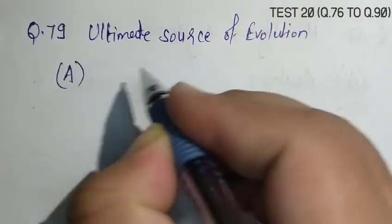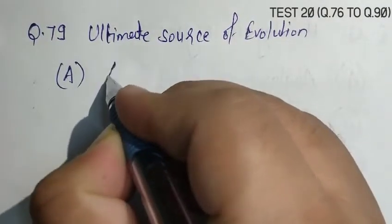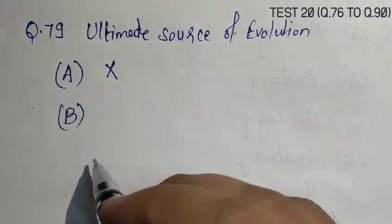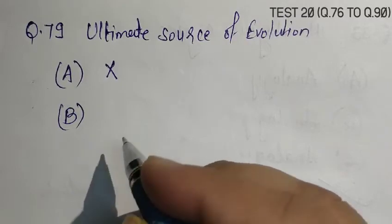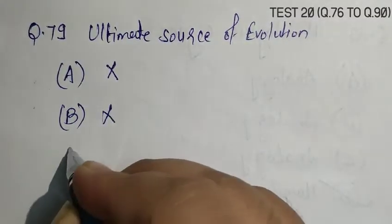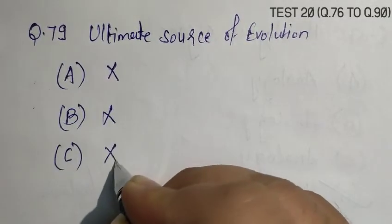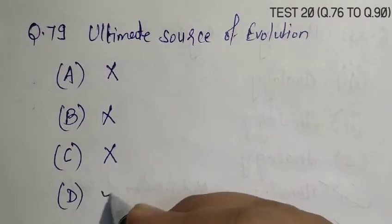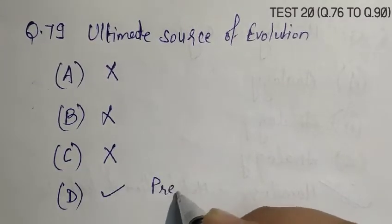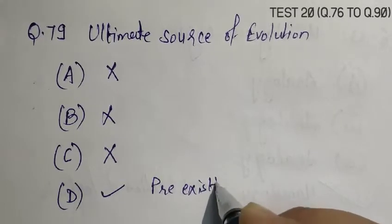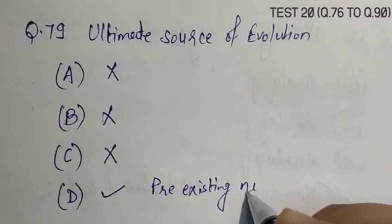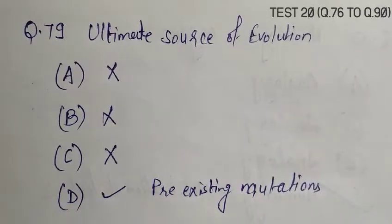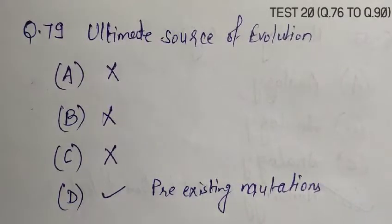A. Natural selection, that is false. B. Sexual reproduction, that is also wrong. C. Hormonal action, that is also wrong. D. Mutations, that is correct. Pre-existing mutations are the source of evolution.